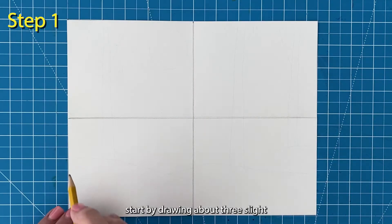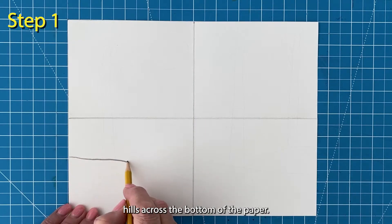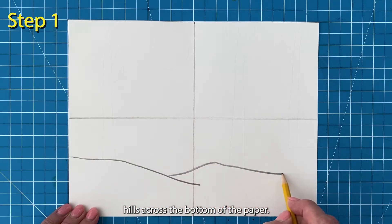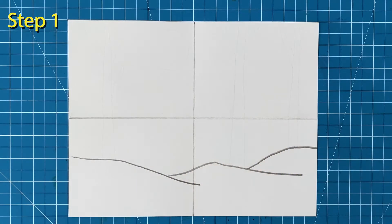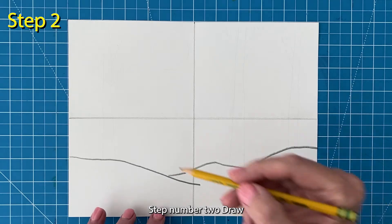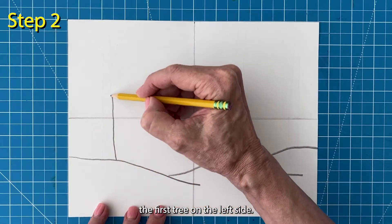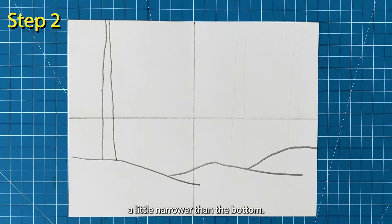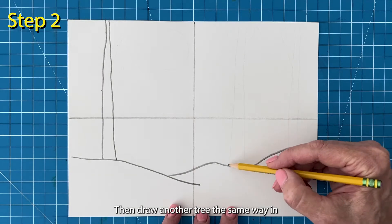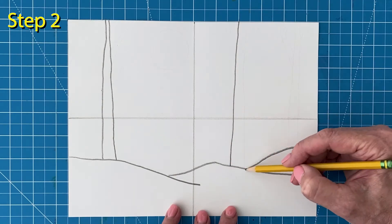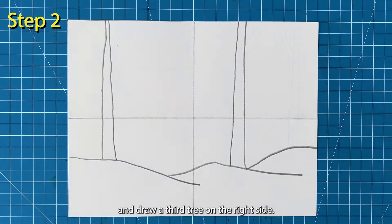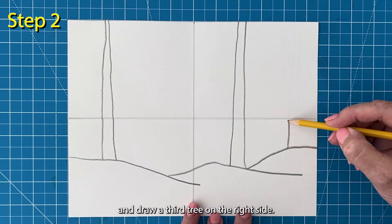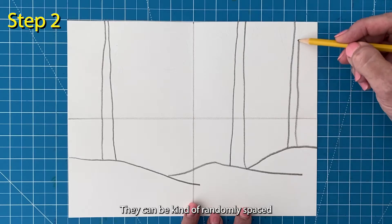Step number one. Start by drawing about three slight hills across the bottom of the paper. Step number two. Draw the first tree on the left side. Make the top a little narrower than the bottom. Then draw another tree the same way in the middle of the paper. And draw a third tree on the right side. They can be kind of randomly spaced if you want.